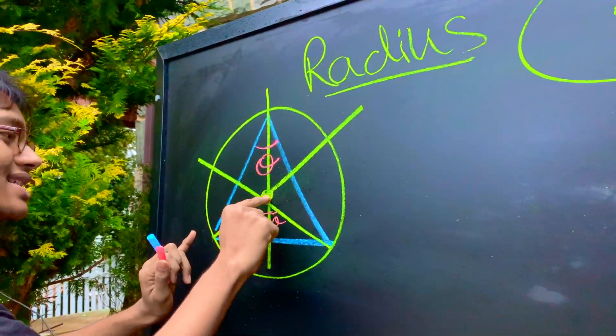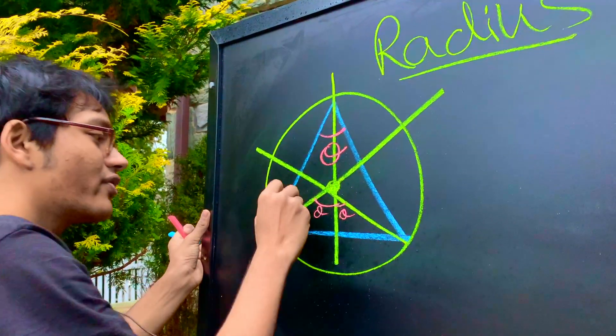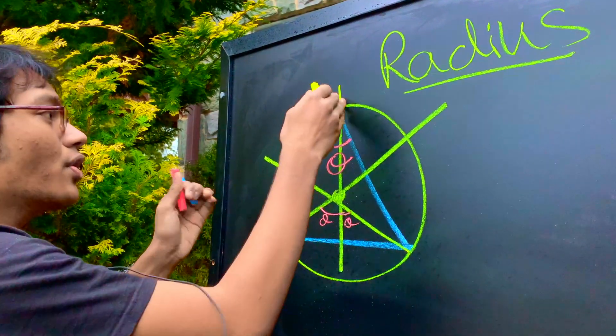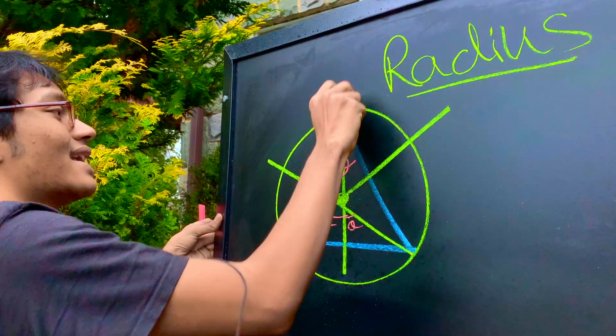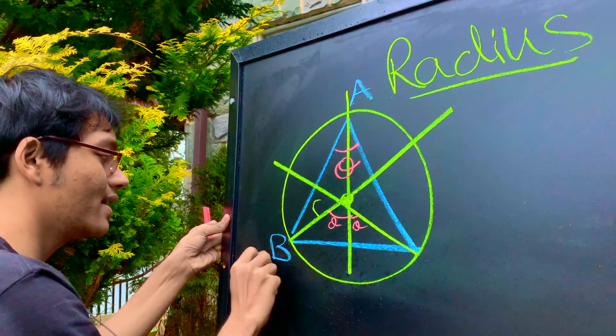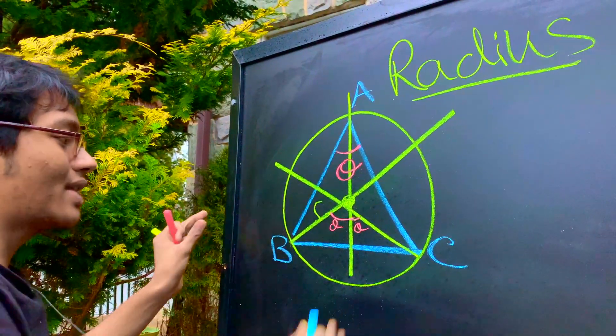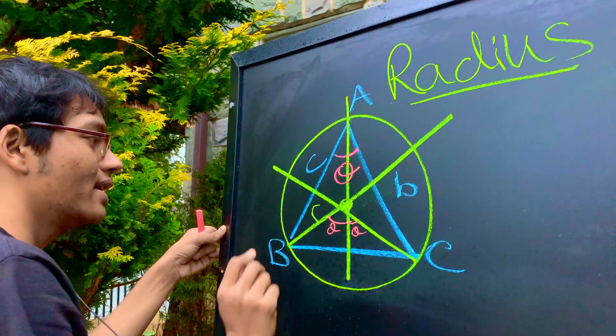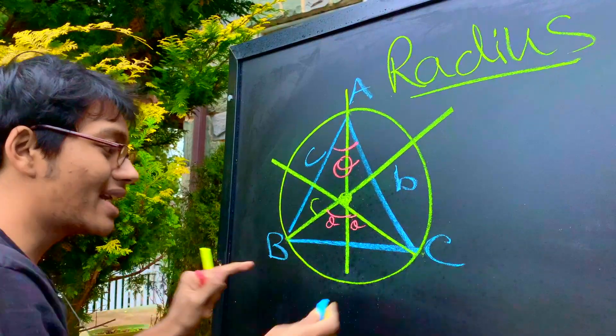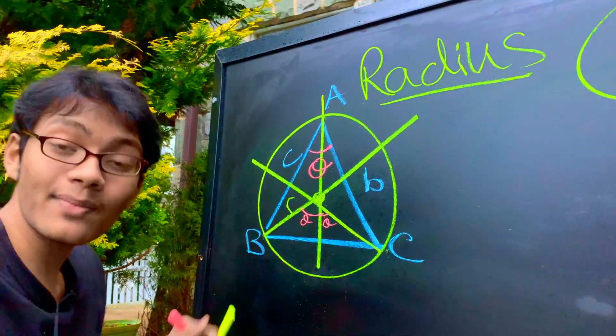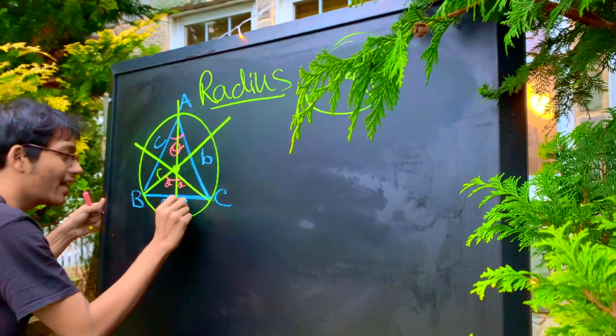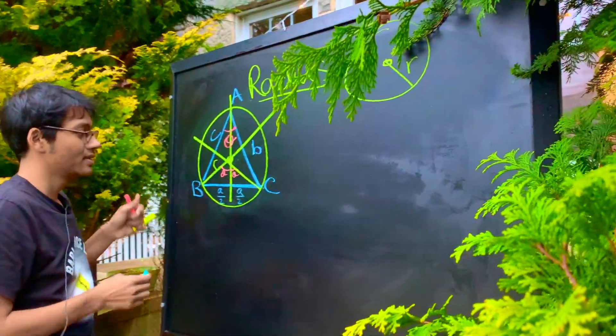We know the distance from the center to the circumference is going to be the radius, r, and we can define this vertex as a, this one as b, this one as c, so that the length of this side is small b, the length of this side is small a, small c, and the length of this side is small a. But if we cut up this side in half, what is small a divided by half? Well, it's going to be a over two.